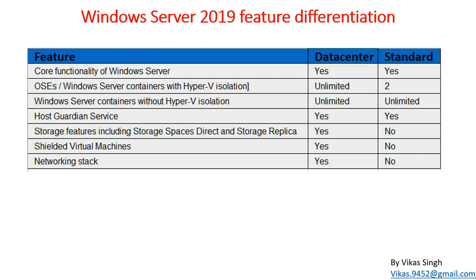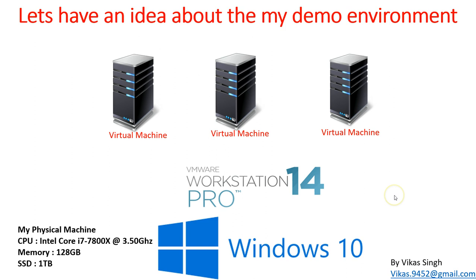Network virtualization and network stack features are also not supported in Standard — only in Datacenter. So if you want to use the maximum advanced features of Windows Server 2019, you need Datacenter edition. However, when deciding which license to buy, think carefully about what features you actually need in production. If you don't need advanced features, Standard gives you all core Windows Server functionality at a much lower cost.